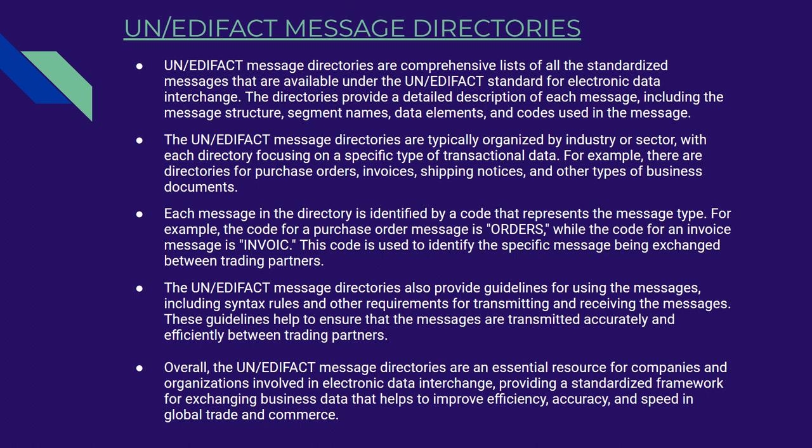The UN-EDIFACT Message Directories are typically organized by industry or sector, with each directory focusing on a specific type of transactional data. For example, there are directories for purchase orders, invoices, shipping notices, and other types of business documents. Each message is identified by a code representing the message type — for example, the code for a purchase order message is ORDERS, while the code for an invoice message is INVOIC. The directories also provide guidelines for using the messages, including syntax rules and other requirements for transmitting and receiving them.